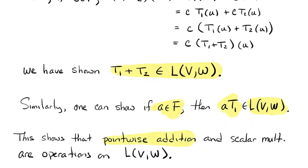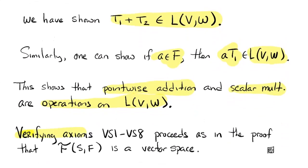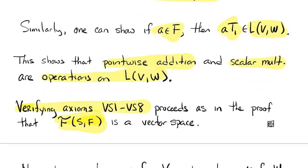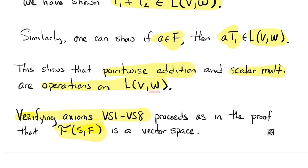That shows the pointwise addition and scalar multiplication operations are actually operations on L(V,W) — the sum of two linear functions is a linear function. I'm going to leave verifying the eight vector space axioms to you, since it proceeds exactly as when verifying axioms for the set of all functions from S to F. The key point is that all those properties hold in W as well. The additive identity is the zero function: for every V, it outputs the zero vector in W.